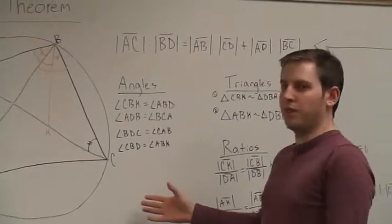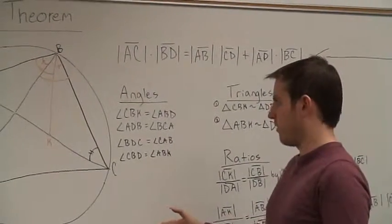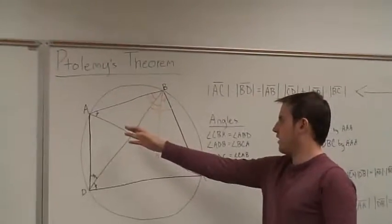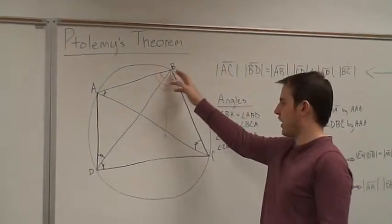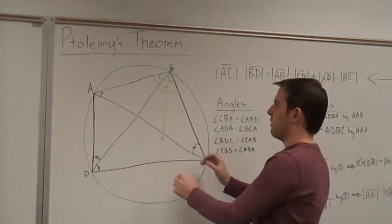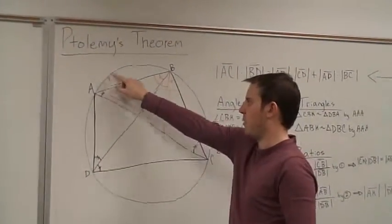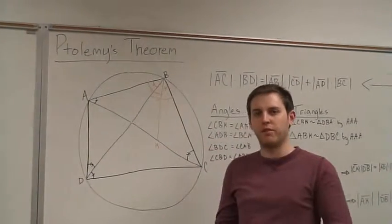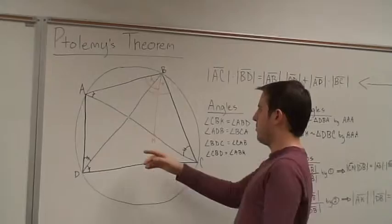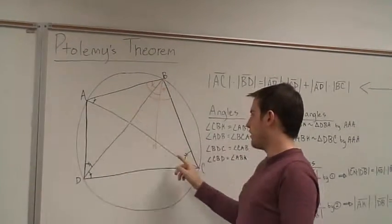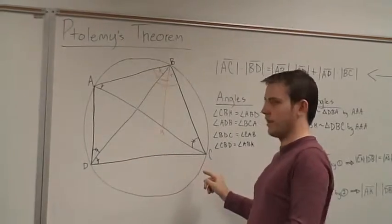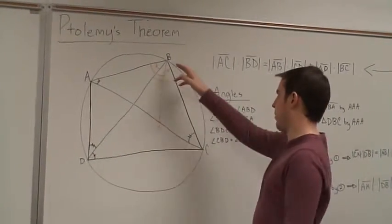From this, we can find equivalent angles. For example, the measure of angle BCA is equivalent to the measure of angle BDA, because both of those angles subtend the same arc AB, and as was proved, that means the measures of those two angles are equal. Similarly, angle BAC is equal to angle BDC, because they both subtend the same arc BC, and so the measures of those angles are equivalent.